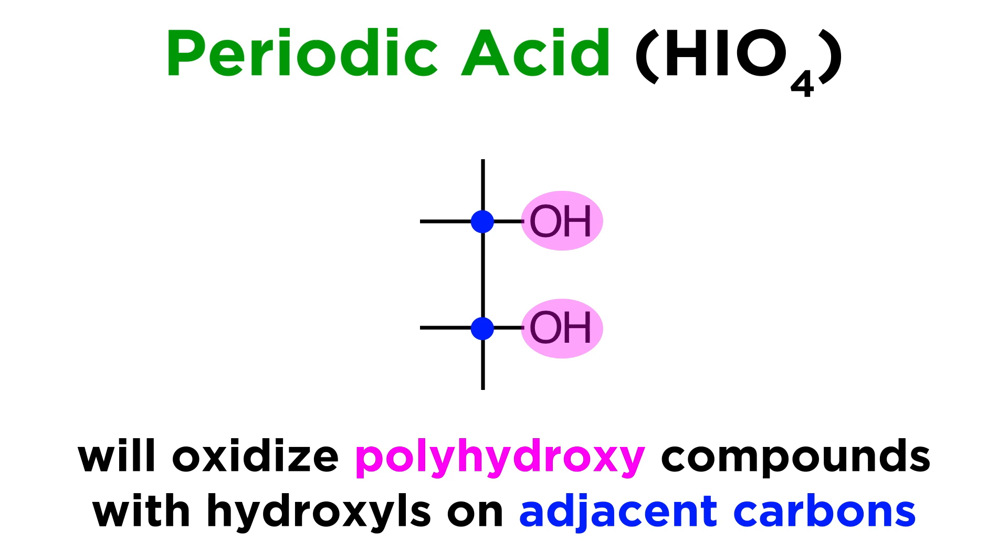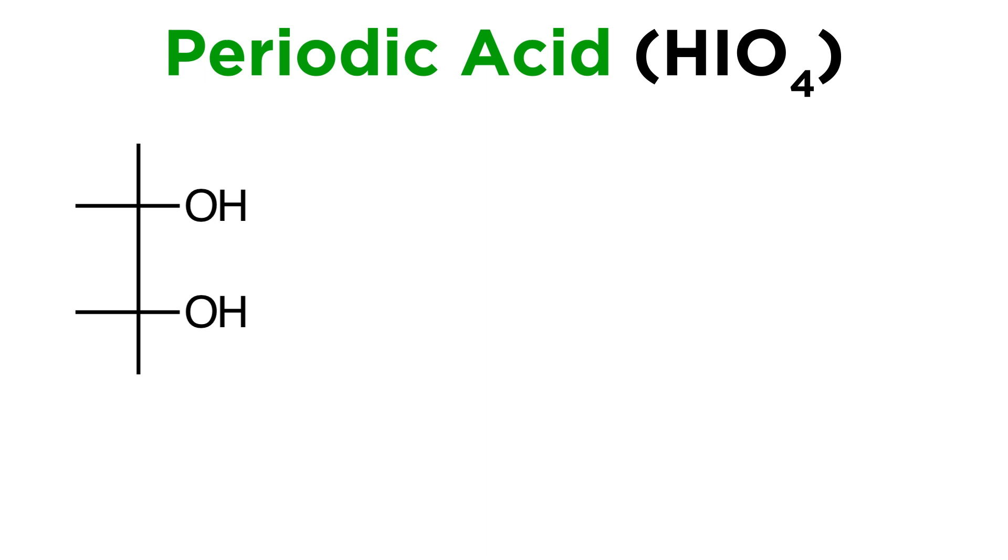For example, take this generalized vicinal diol. If periodic acid is introduced, the bond between these carbons will cleave, and two carbonyls will be produced, which can be aldehydes or ketones depending on the rest of the molecule. Periodic acid will lose an oxygen in the process, becoming iodic acid, and a water molecule is also produced.